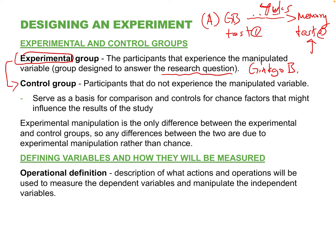Why can't we say that ginkgo biloba directly caused memory improvement? Even though we did hand people ginkgo biloba, there's no comparison group. The reason we cannot claim a direct cause is confounding variables. Think about all the things someone encounters in daily life that could also improve memory — their diet, the amount of sleep they got, almost anything could have contributed to the improvement between test one and test two.